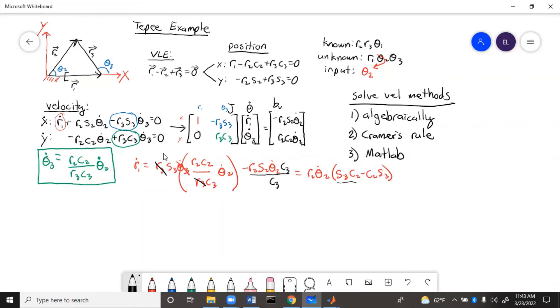Now this right here is a trig identity, sine of theta 3 minus theta 2. So then finally, here we have solved out for velocity.